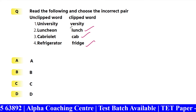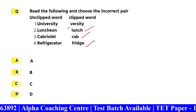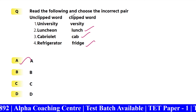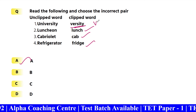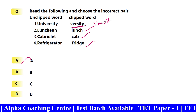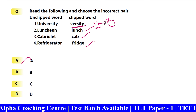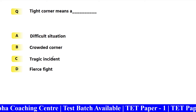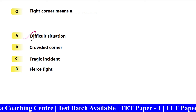This is incorrect — we can check Option A. Varsity spelling. Next: 'Tight corner' — Option A — difficult situation.